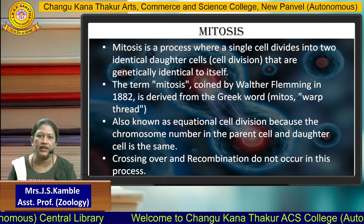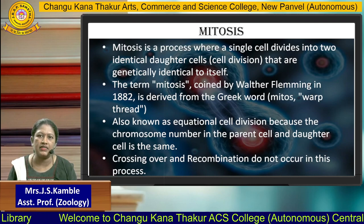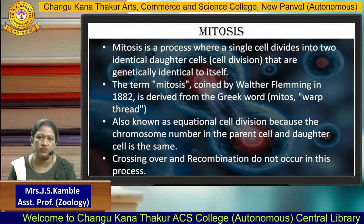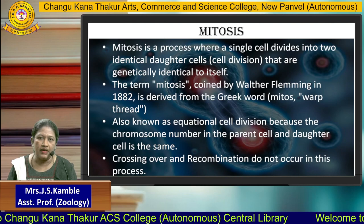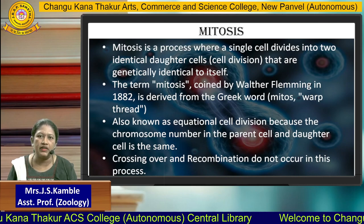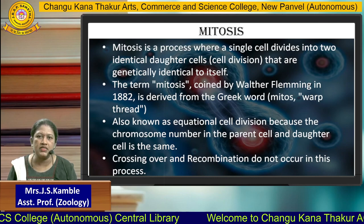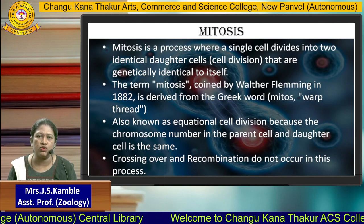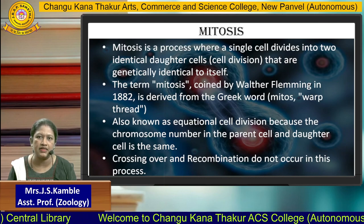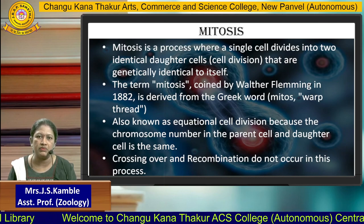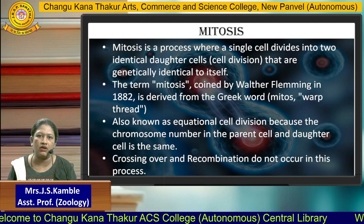For example, a human cell consists of 46 chromosomes. Whenever the human cell is dividing, each of the daughter cells will contain 46 chromosomes. Mitosis is carried out in the somatic cell; it is never carried out in the sex cells, that is the sperm and ovum. Crossing over and recombination also do not occur in this process.